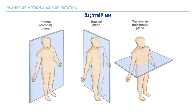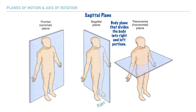Next, we have the sagittal plane, and it's this plane of motion that is responsible for dividing the body into right and left portions. It's important to remember that we need to refer to the right and left based on anatomical positioning — so this would be the individual's right side and this would be their left side.